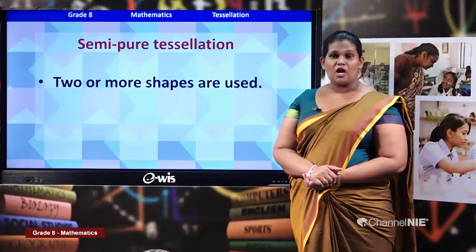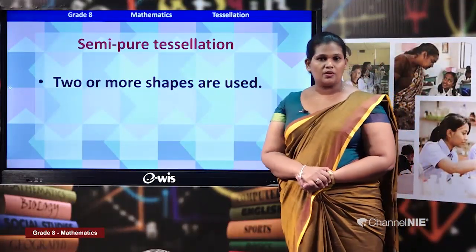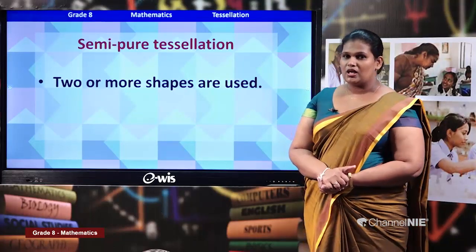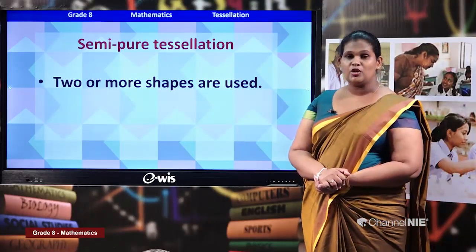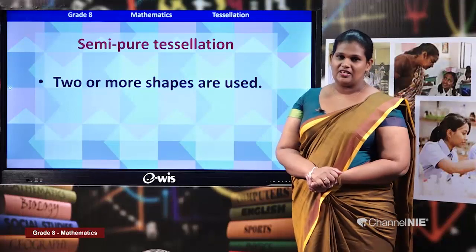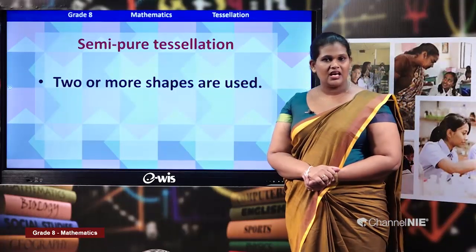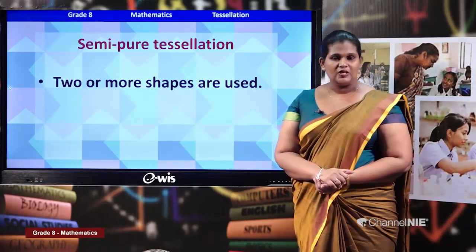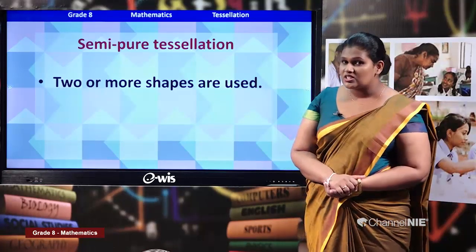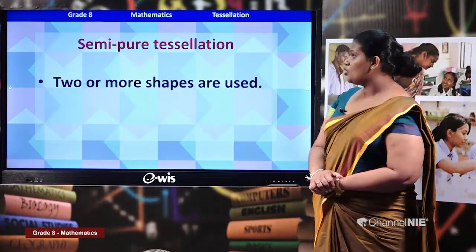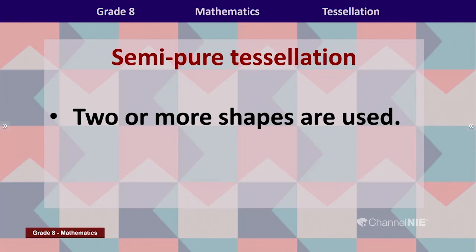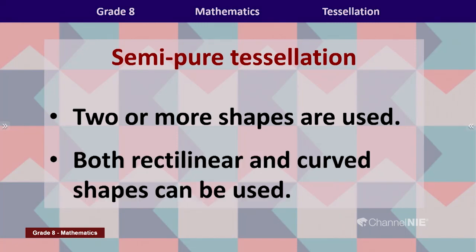Now we have discussed more about semi-pure tessellations — a lesson from grade 7. Semi-pure tessellations consist of two or more shapes. In semi-pure tessellations we can use both rectilinear and curved shapes.